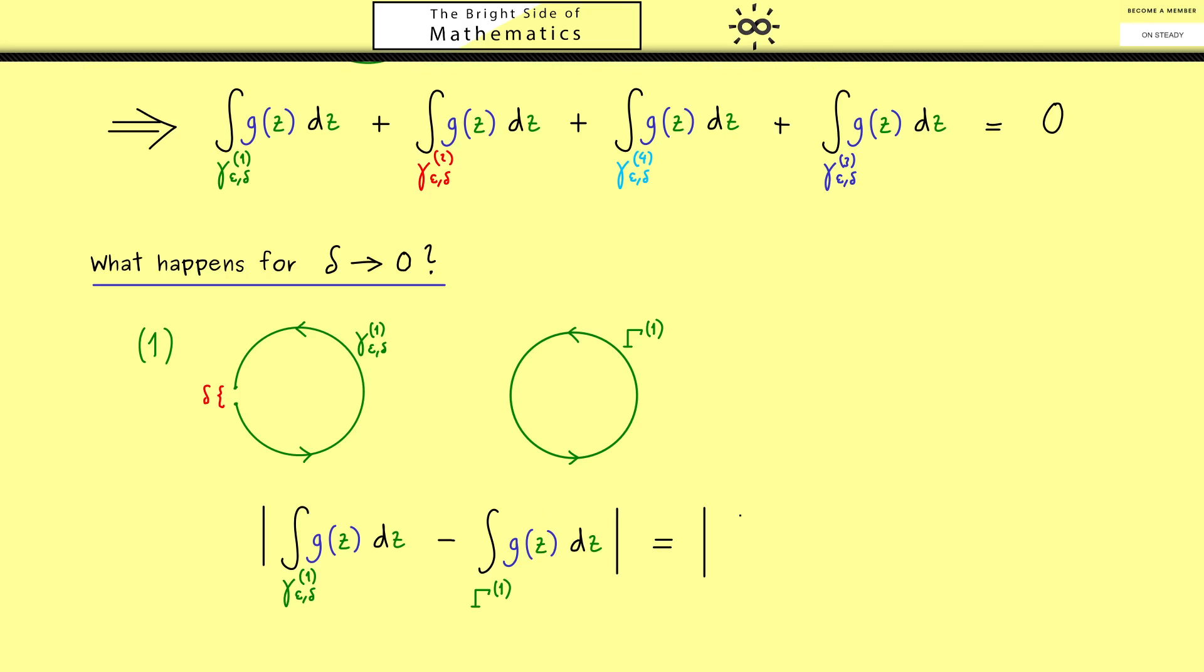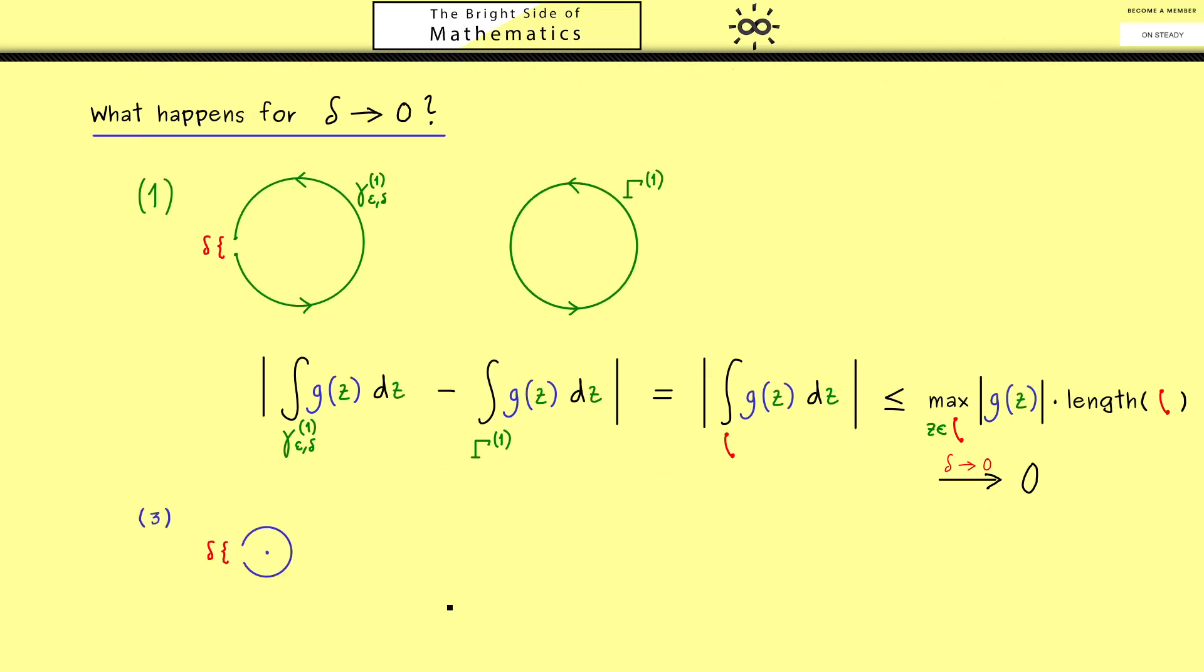And then we simply know this is the absolute value of a new contour integral, namely the contour integral along the small line there. So maybe I don't give it a name, I just draw a small line there. You see, we don't need a name because we can immediately do the standard estimate, which is given as the maximum of the absolute value of g of z, where z goes through the curve, times the length of the curve. And now it should be obvious that this length goes to 0 when delta goes to 0. So we can simply conclude the whole thing goes to 0. So you see, this is a very important fact because it means for the limit delta to 0, this integral here goes to this integral. So in other words, in the limit we are able to use the full circle.